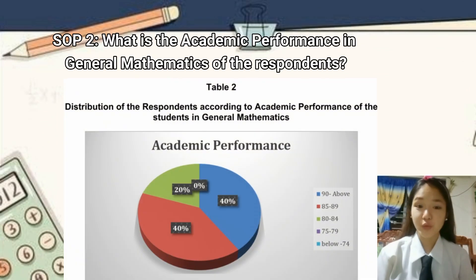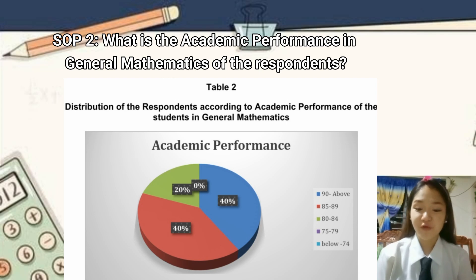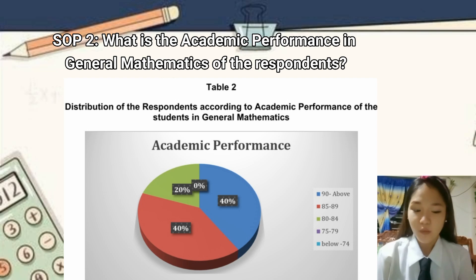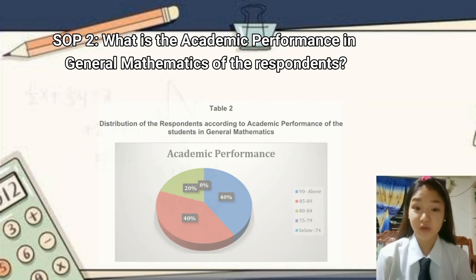Number 2: What is the academic performance in general mathematics of respondents? The academic performance of 90 above and 85 to 89 got the same highest frequency, having 12 subjects each equivalent to 40%, followed by those with 80 to 84 who got only 20% with 6 subjects, while 75 to 79 and below 74 had no respondents.